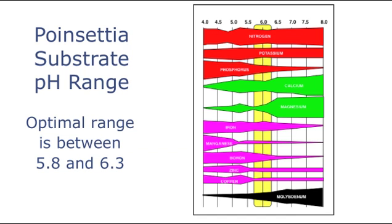As illustrated in this graphic, the optimal substrate pH for poinsettias is between 5.8 and 6.3. This maximizes the availability of both macro and micronutrients. This is especially important because poinsettias require a larger amount of molybdenum for optimal growth, and at low pH ranges, its availability decreases.